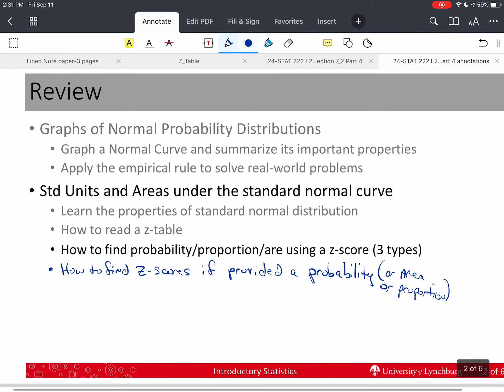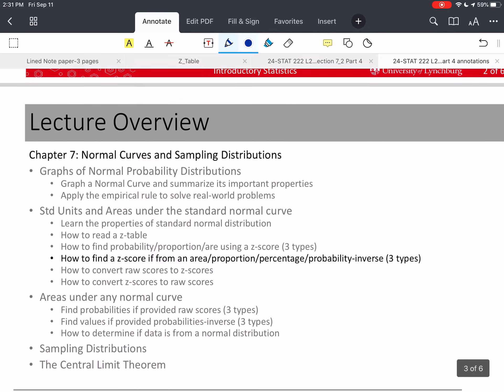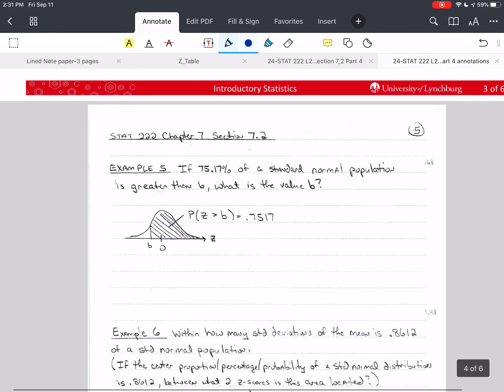Last time we saw two ways to find z-scores when we were given a probability, or we could say given an area or proportion, since those are the same thing in this section. So we will continue that and go a little further.